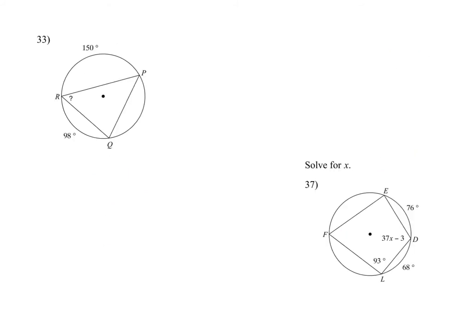This next section is all about inscribed angles. Remember: central angles equal the arc measure, but inscribed angles are half of the arc measure. They want this angle, which means I need to know the arc. They've given me everything except that arc. A whole circle is 360 degrees, so I'm going to say 360 minus the other two pieces — 150 plus 98 — and I get 112. The angle measure should be exactly half of that arc measure, so I divide by 2 and get 56 degrees.